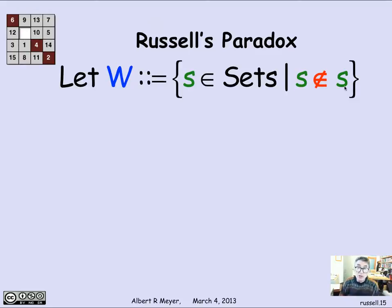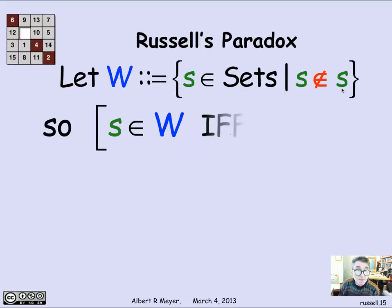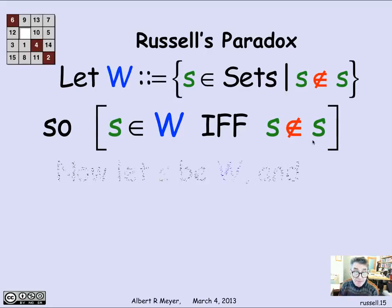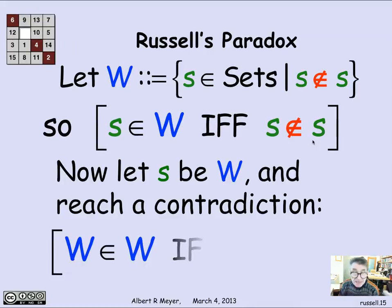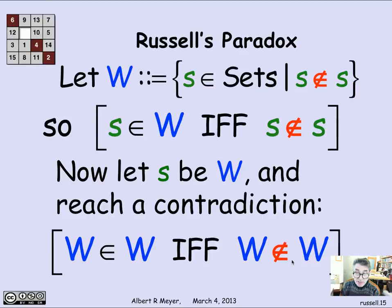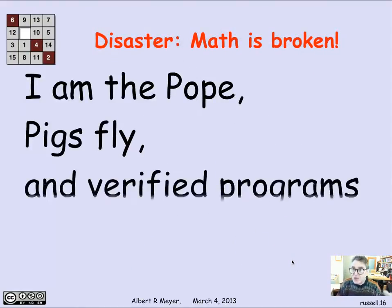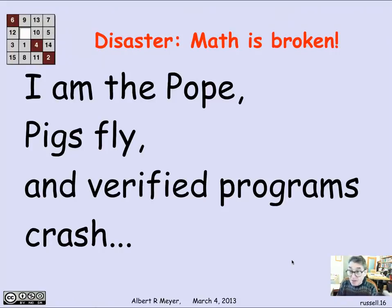The problem was that Russell came along and looked at Frege's set theory and came up with the following paradox. He defined W to be the collection of S in sets such that S is not a member of S. Frege would certainly have said that's a well-defined set, and he will acknowledge that W is a set. And let's look at what this means. I mean, this is a diagonal argument. So let's remember, by this definition of W, what we have is that a set S is in W if and only if S is not a member of S. OK. That's fine. Then just let S be W. And we immediately get a contradiction that W is in W if and only if W is not in W. Poor Frege. And his book was a disaster. Math is broken. You can prove that you're the pope. You can prove the pigs fly. Verified programs crash. Math is just broken. It's not reliable. You can prove anything in Frege's system because it reached a contradiction. And from something false, you can prove anything.